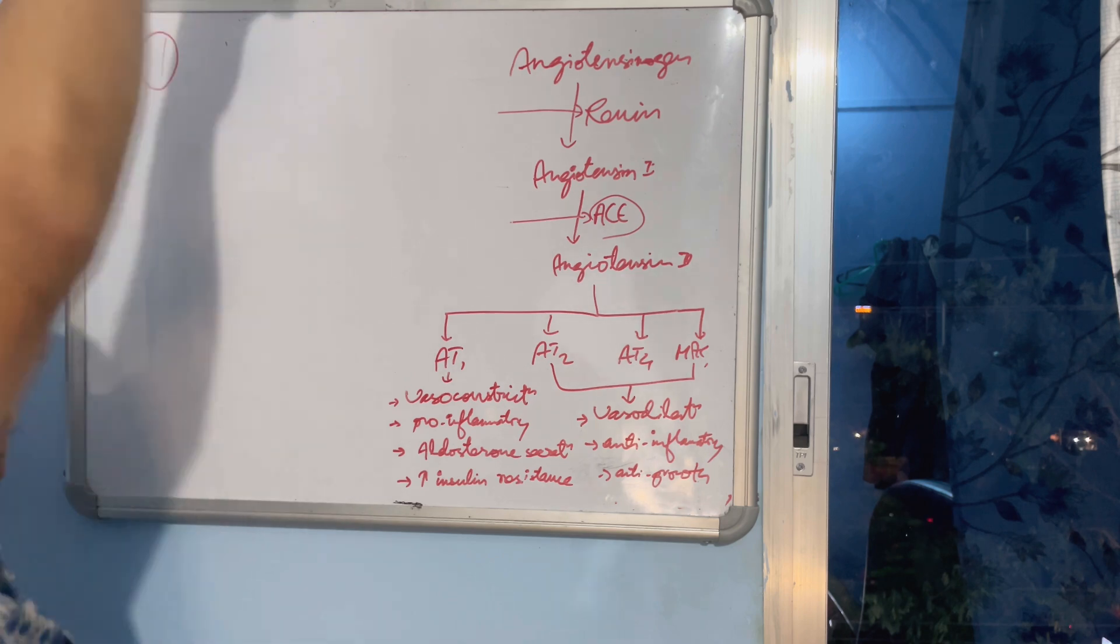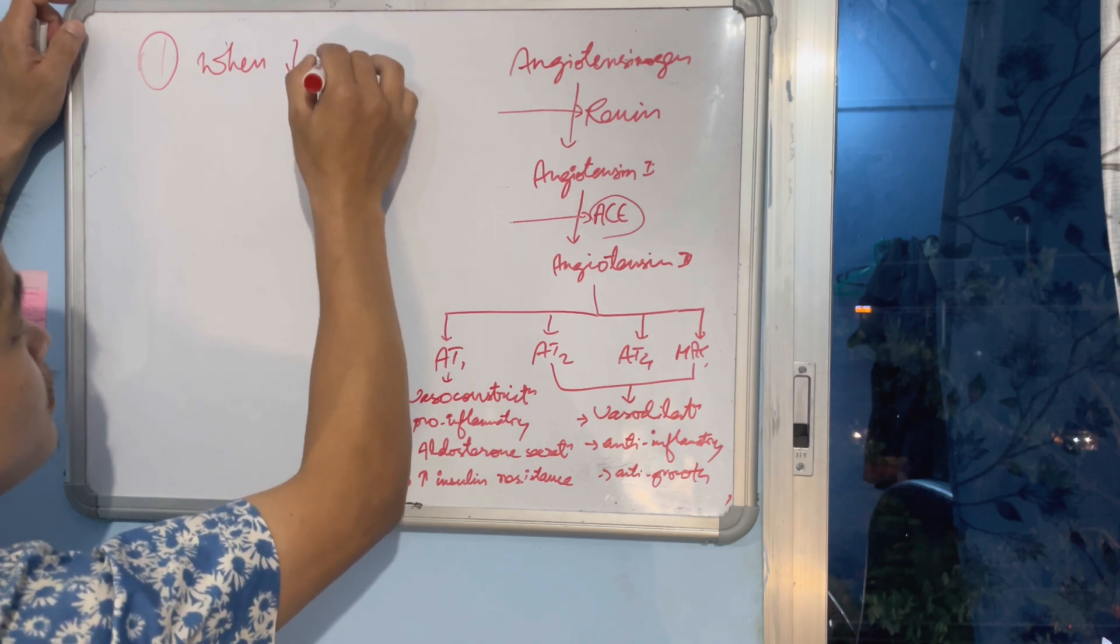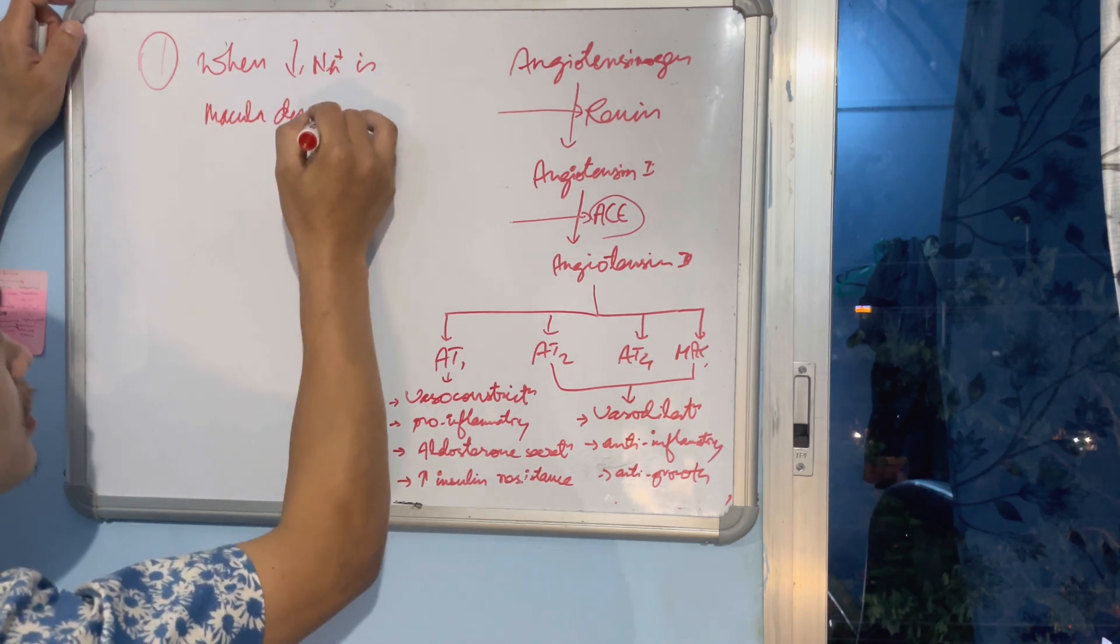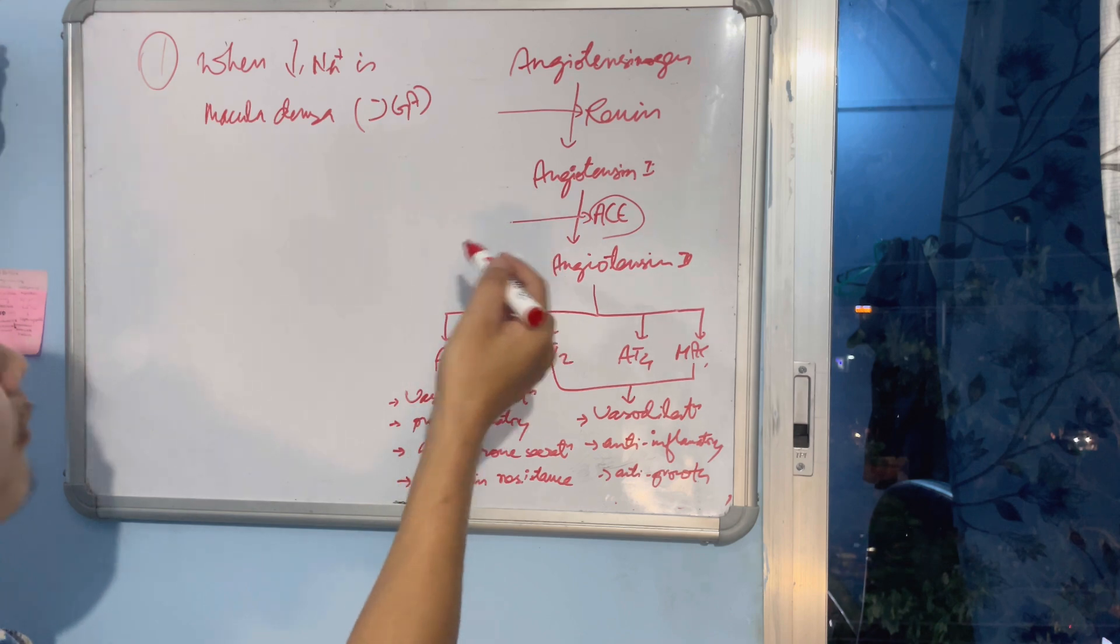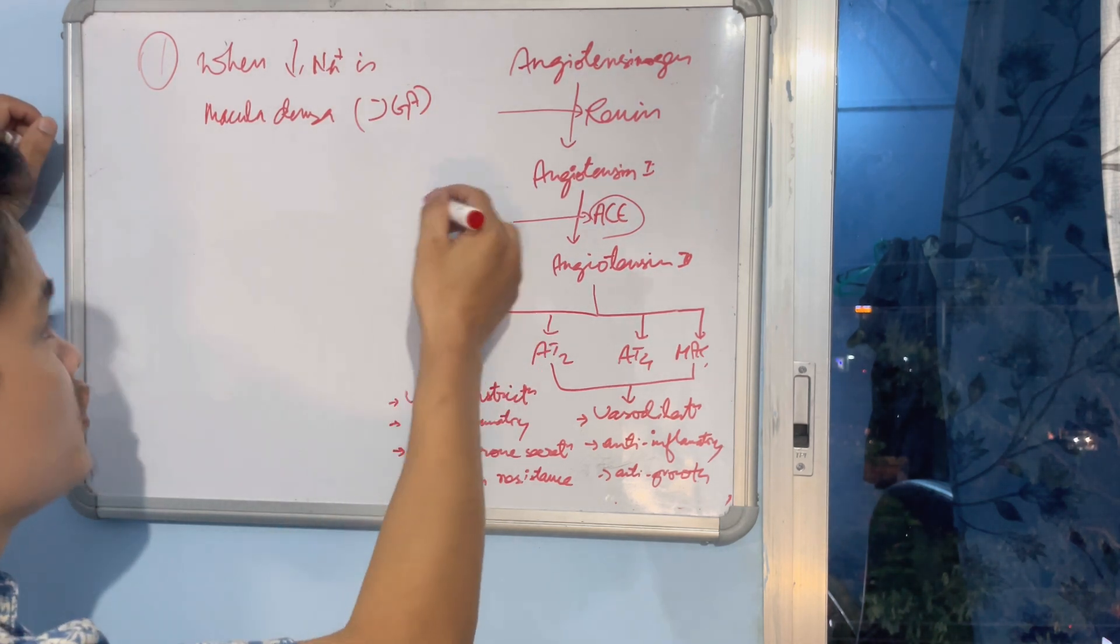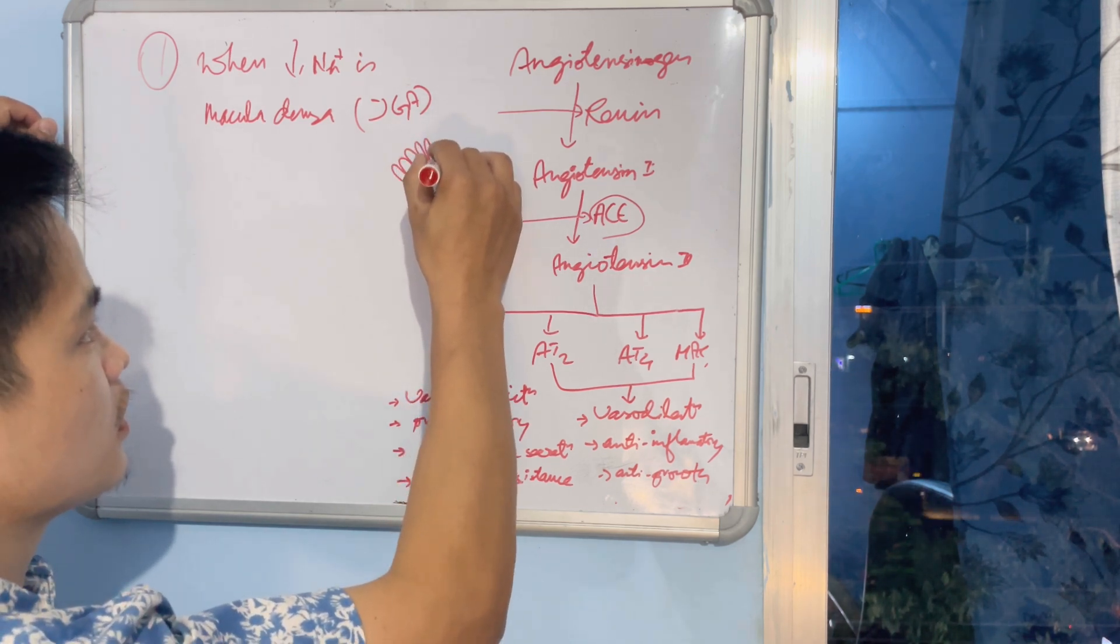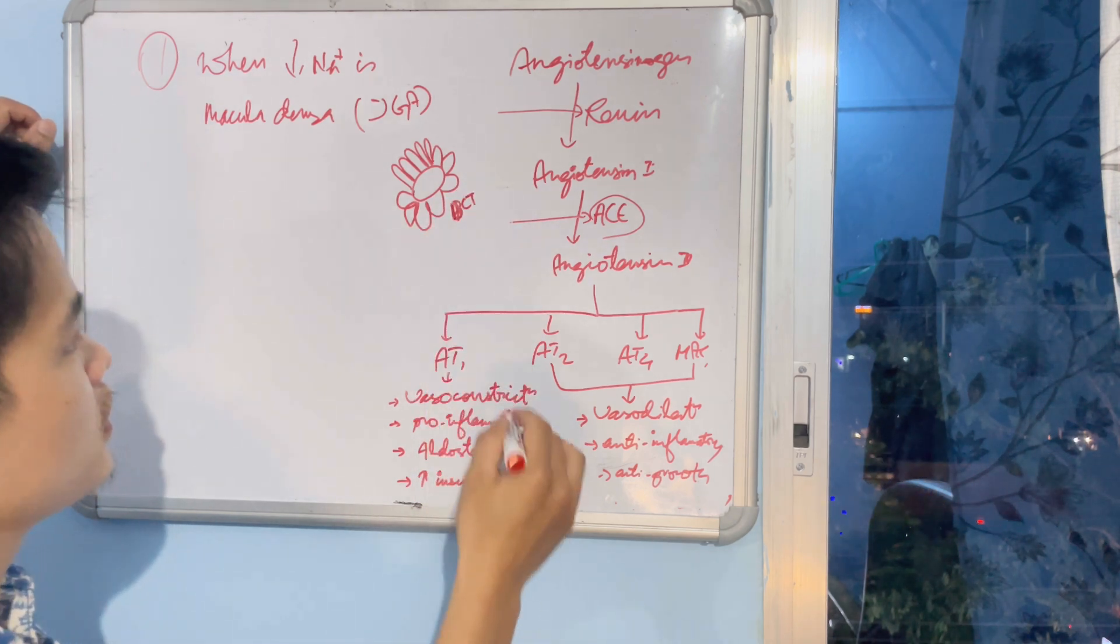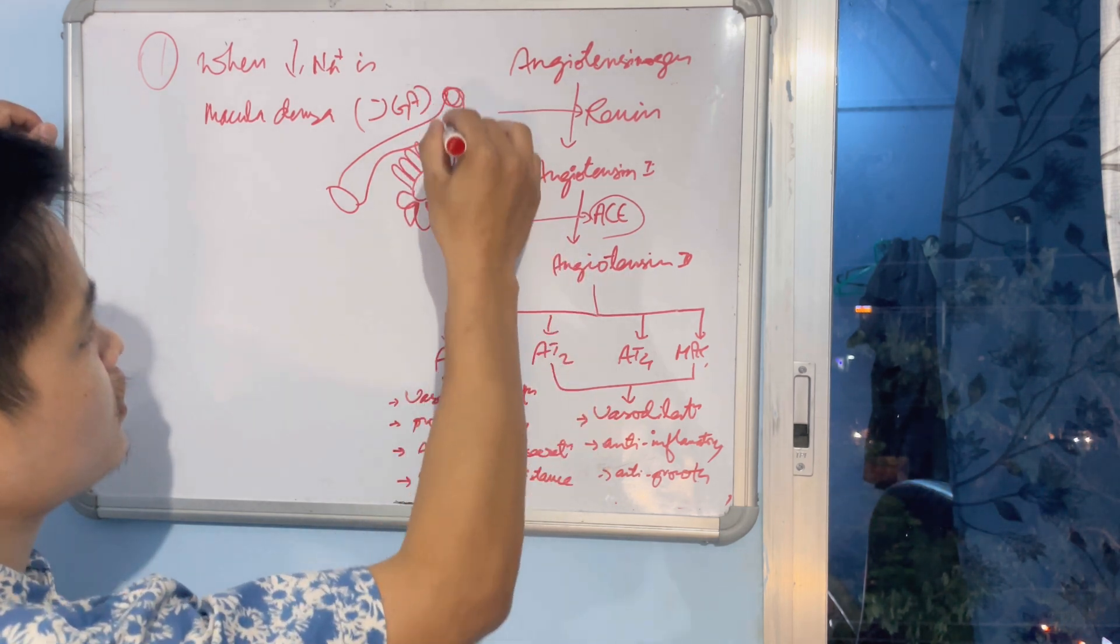First condition is when decreased sodium is detected by macula densa. Macula densa is part of JGA - juxtaglomerular apparatus. These are modified cells, columnar cells in the distal convoluted tubule. There is something like this: this is your DCT, and from here your afferent arteriole. This is your afferent arteriole.